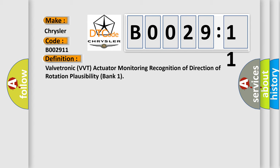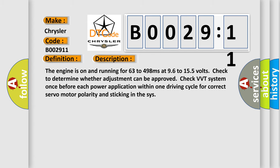And now this is a short description of this DTC code. The engine is on and running for 63 to 498 milliseconds at 96 to 155 volts to check whether adjustment can be approved. Check VVT system once before each power application within one driving cycle for correct servo motor polarity and sticking in the SIS.